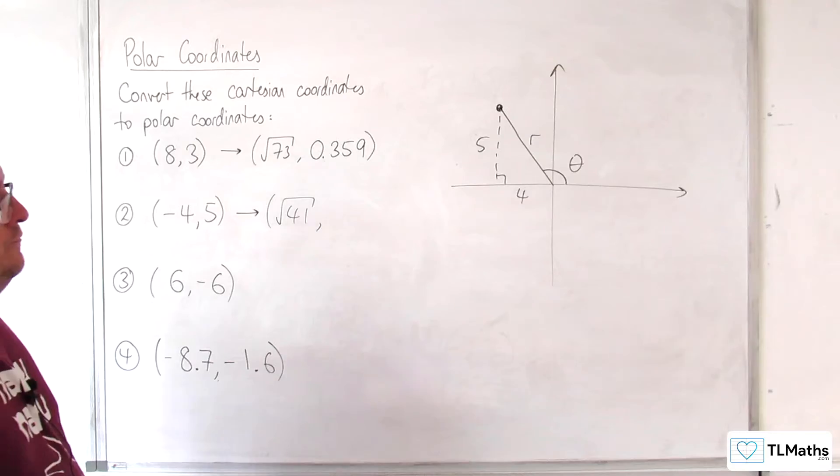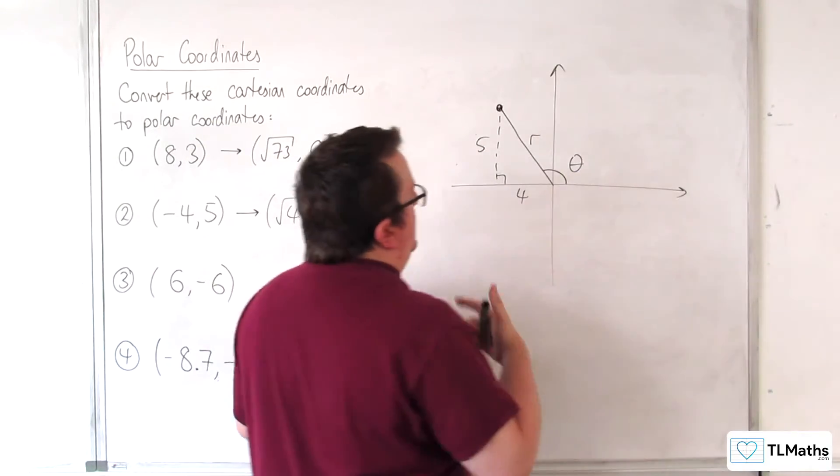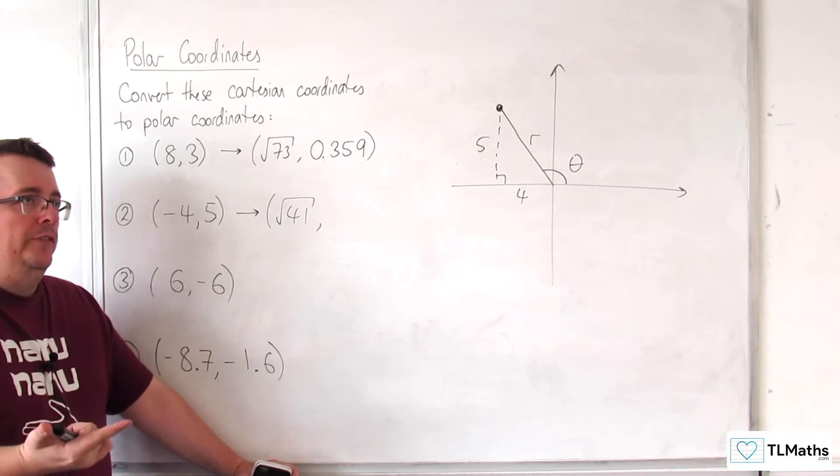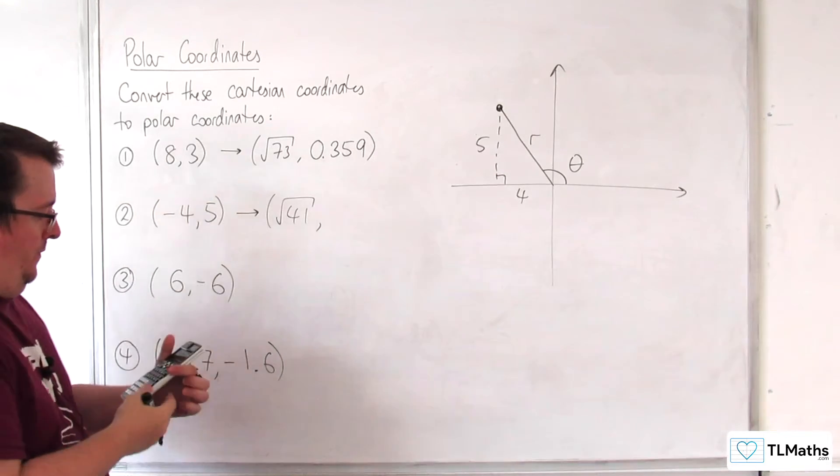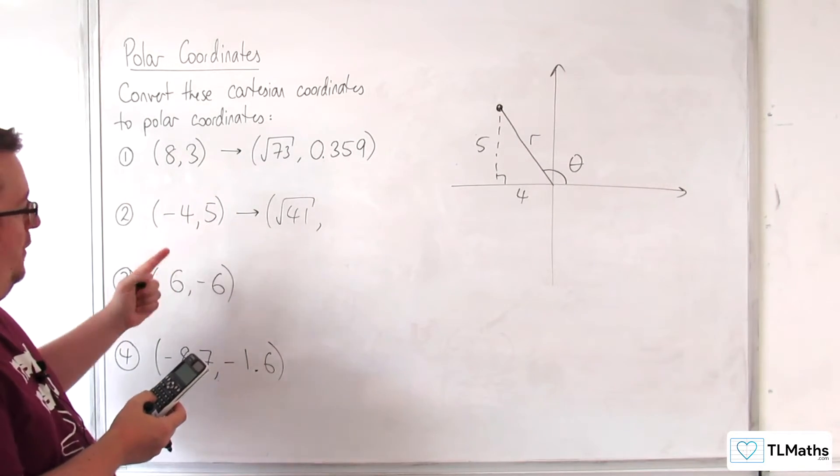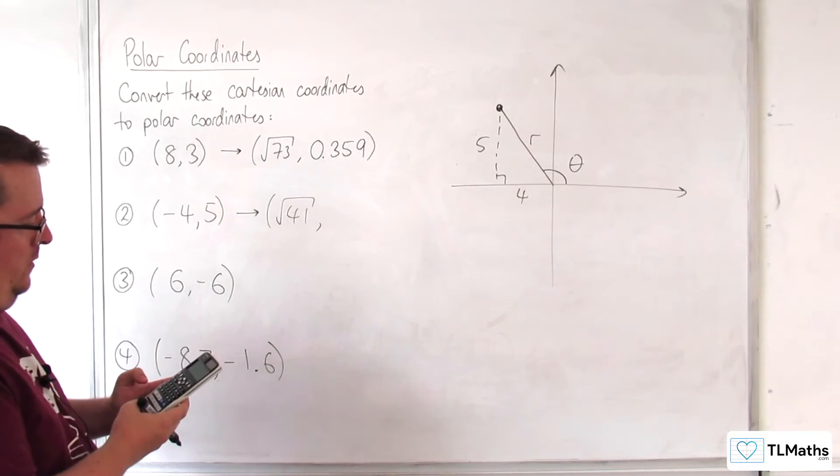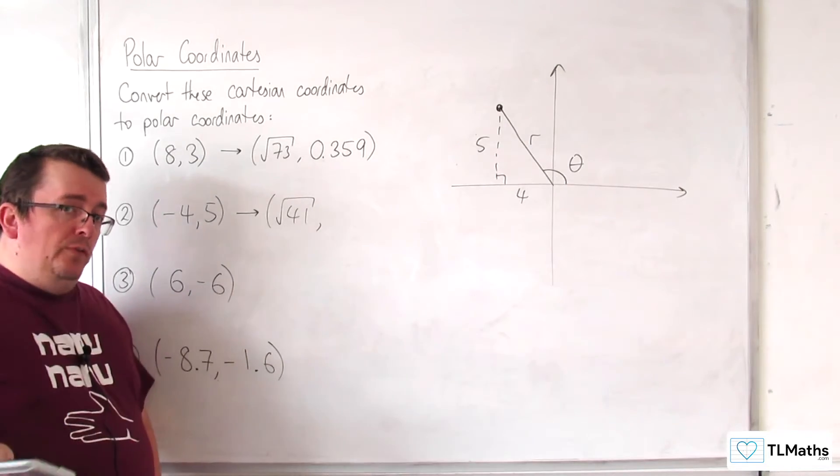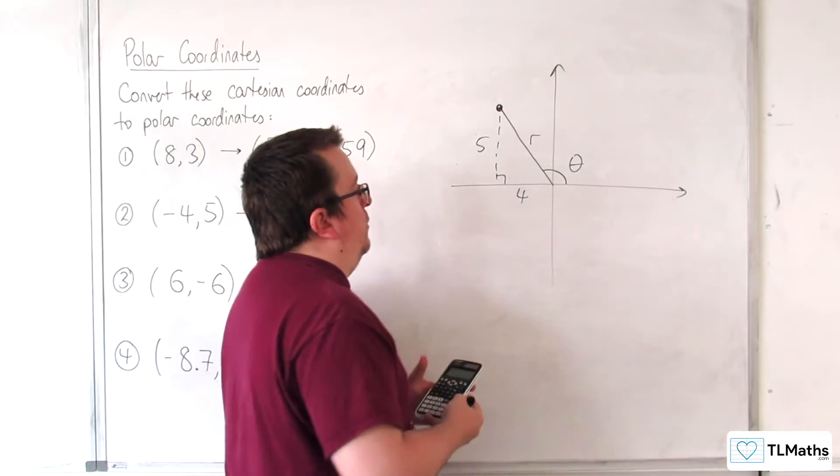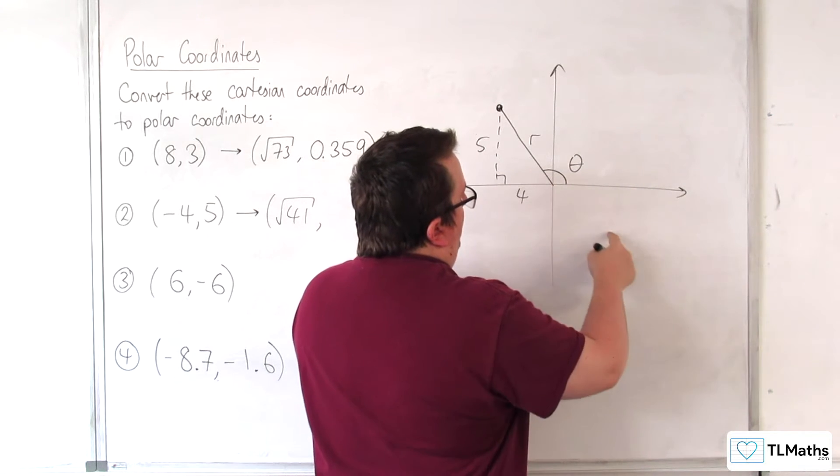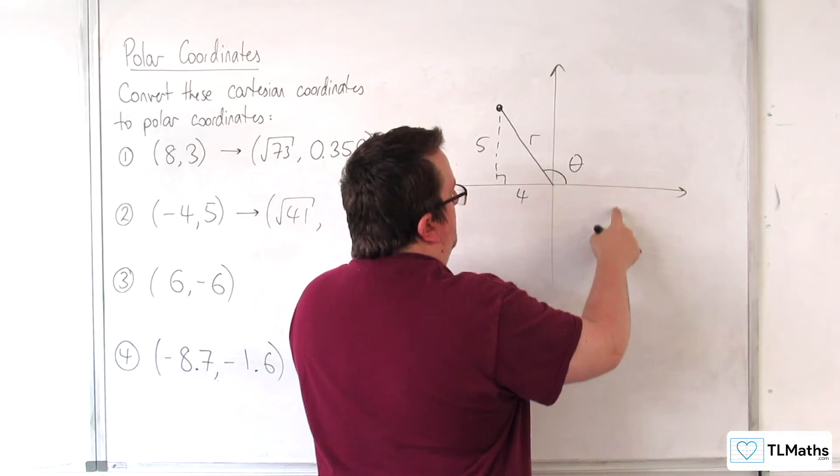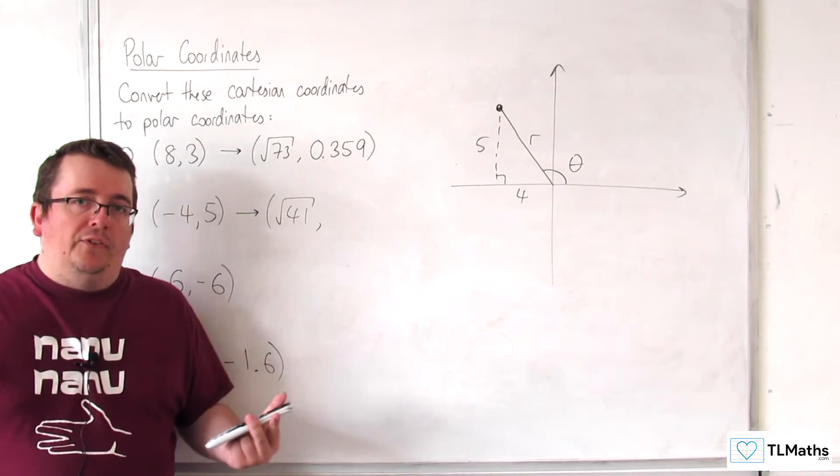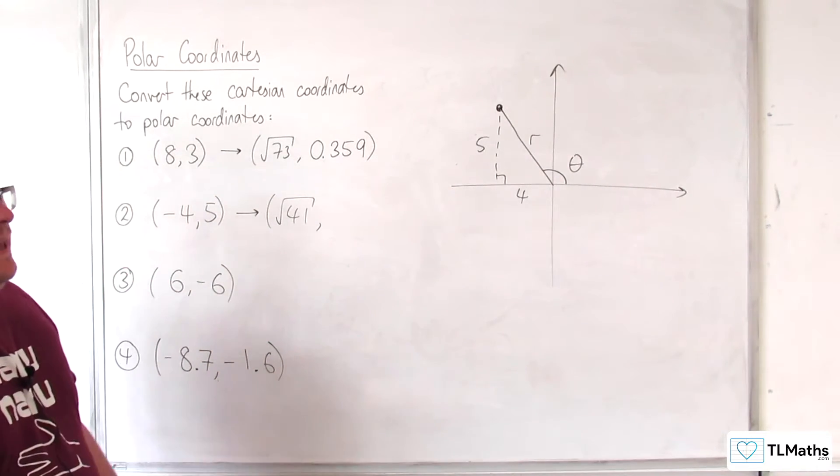Now, the angle that we need here. You might be thinking, well, previously we defined theta as the inverse tan of y over x. So why can't we do inverse tan of 5 over minus 4? And we get minus 0.896. Now, we know that's wrong. Because that's going to give us an angle that's down here somewhere, because it's minus. So we've got to be a little bit careful here.